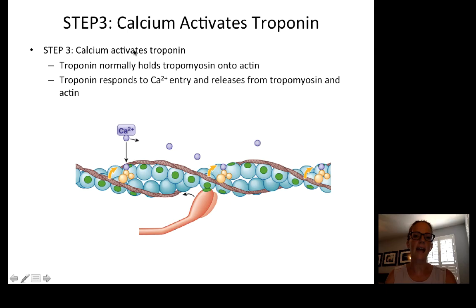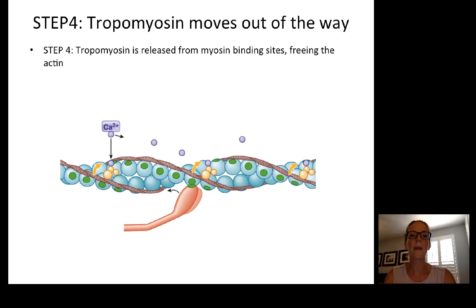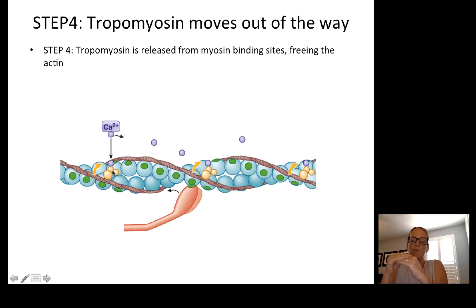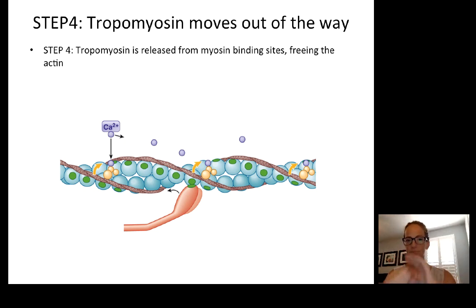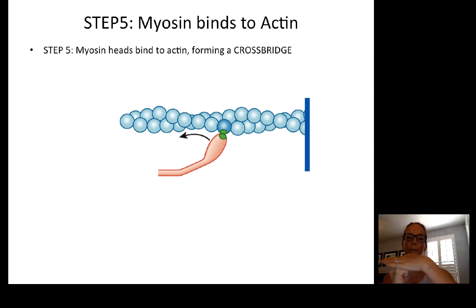Calcium activates troponin — it unlocks the key. Calcium binds to troponin, and the troponin releases from tropomyosin. Once troponin releases tropomyosin, tropomyosin — the rope-like protein that was stretched on top of and blocking the myosin binding sites on actin — moves out of the way. The actin binding sites are now available, so the myosin heads are able to bind specifically to the actin. When the myosin heads bind to the actin, we form what's called a cross-bridge.